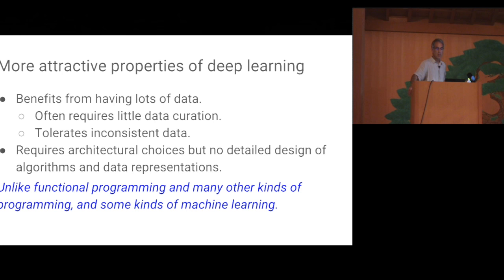Some other attractive properties of deep learning are that it can benefit from having a lot of data. It is not uncommon for the training data sets to contain millions of examples, as in the ImageNet case. And often the data requires very little data curation. It is not typically required that humans spend a lot of time selecting the interesting features of the data or removing inconsistencies from the data. The neural networks typically do a great job of extracting signal from the data anyway.